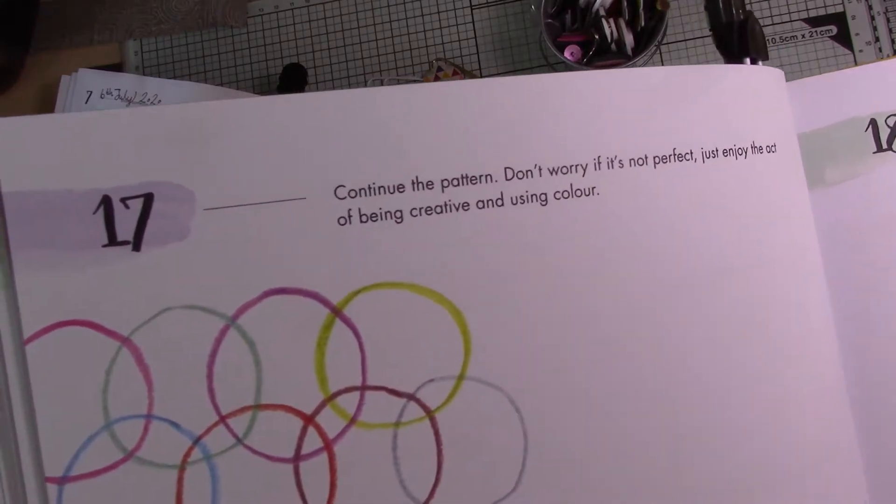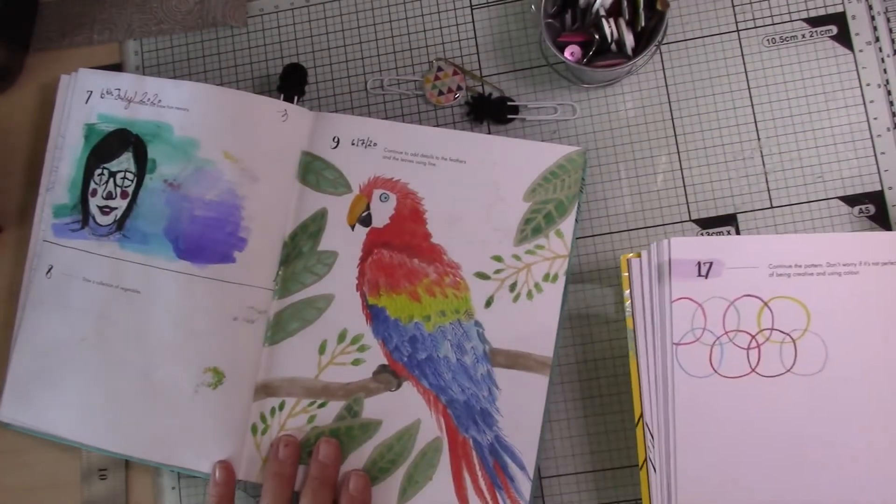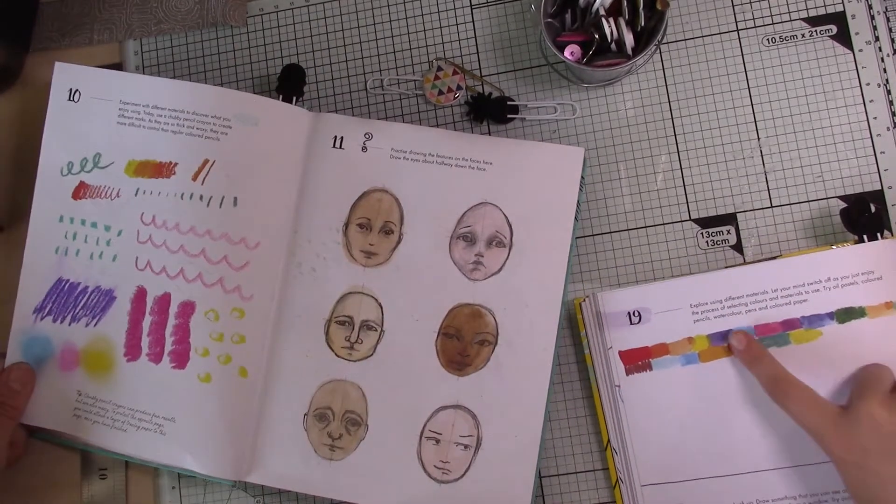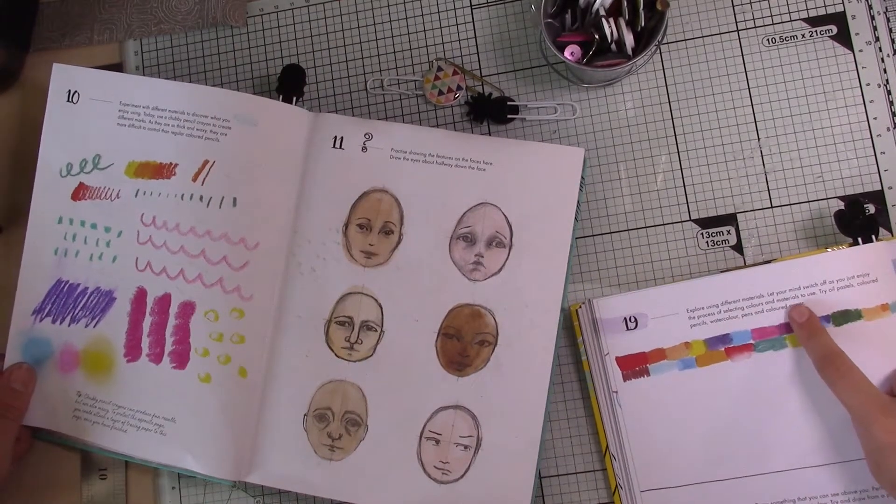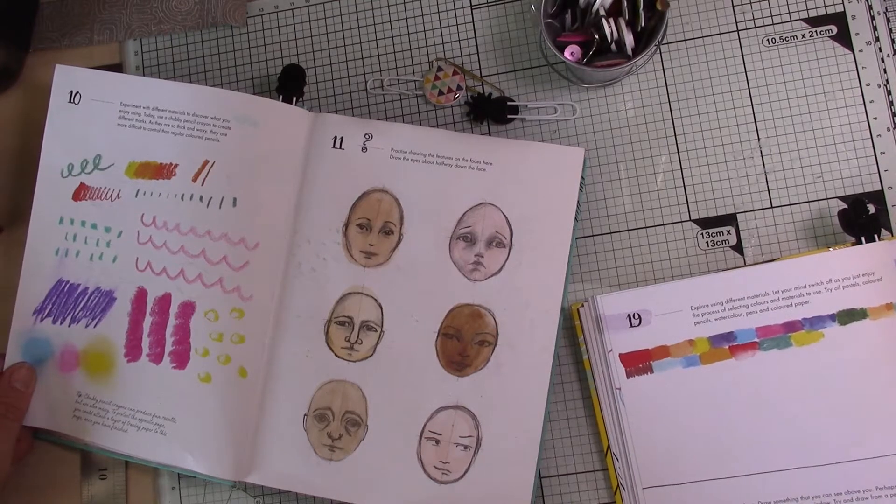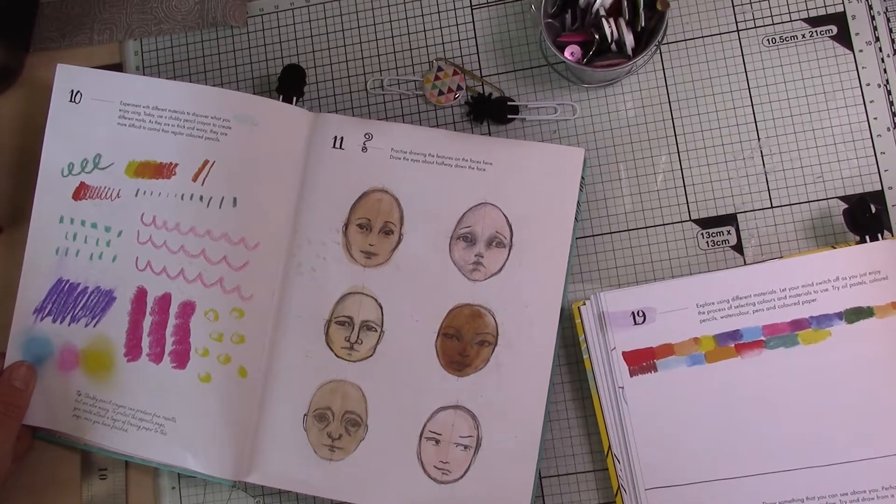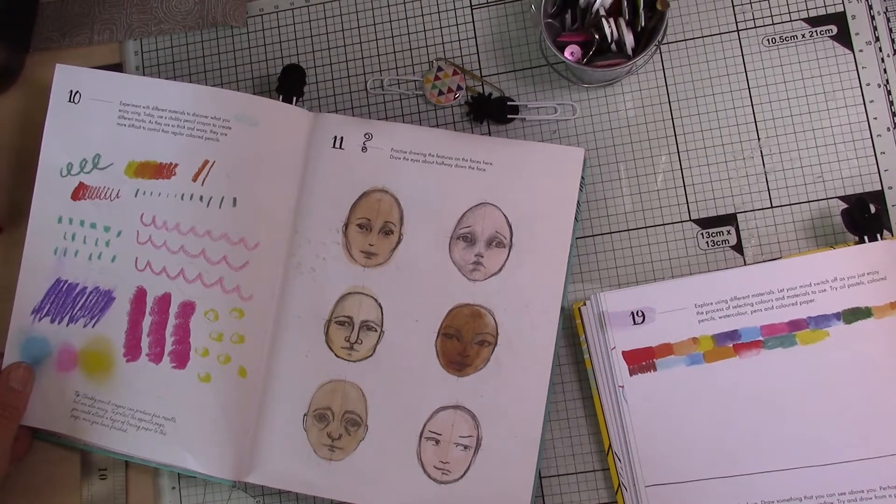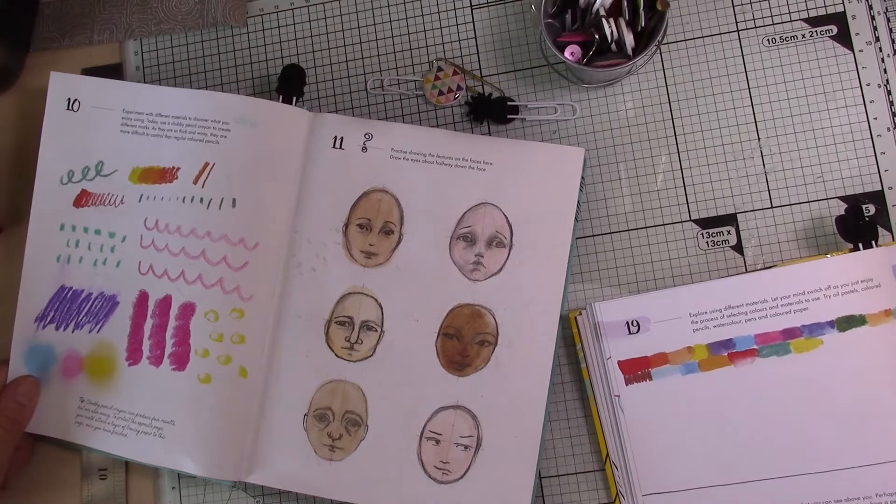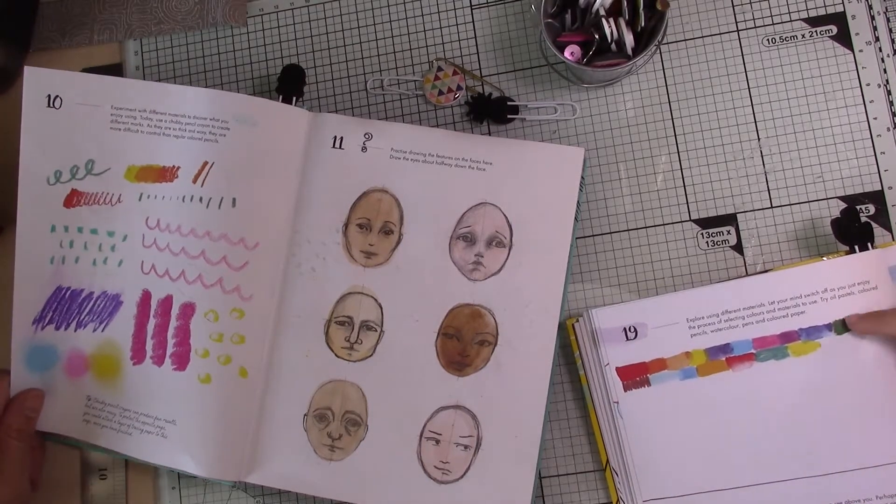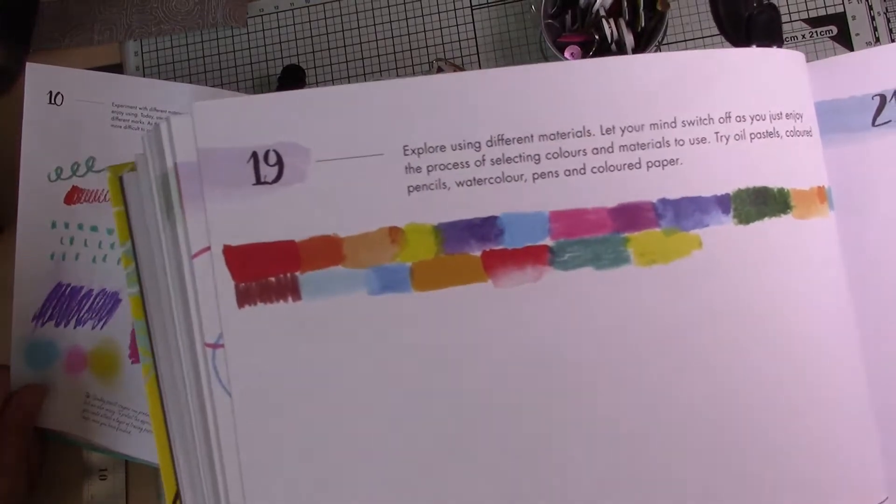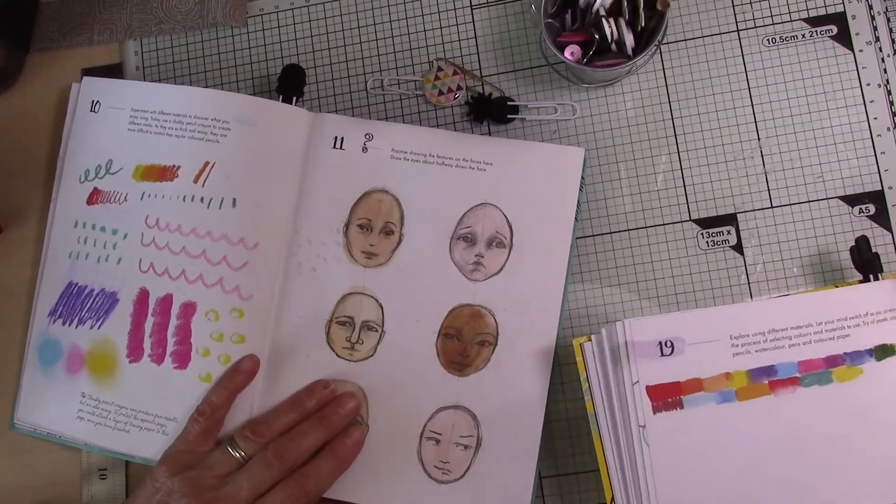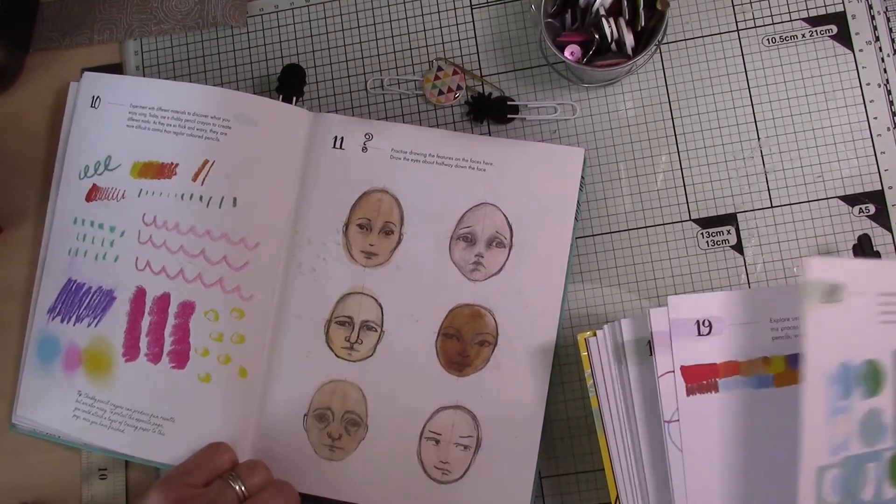Draw something you know from memory - can you guess who that is? That's that picture what was in the Reckless Journal. Yeah, it's me basically, me when I was a clown. This one was draw a collection of vegetables and I'm bored by that one so I haven't done it yet. This one was adding details on the feathers. This one's like a bit like the Olympic rings and you've got to continue the circles. I like the ones where you just continue the patterns because you can try out all your different, yeah, and you can try out all your pens and stuff. Explore using different materials - let your mind switch off as you can just enjoy the process of selecting colors and materials to use. Try oil pastels, colored pencils, watercolor pens, and colored paper.